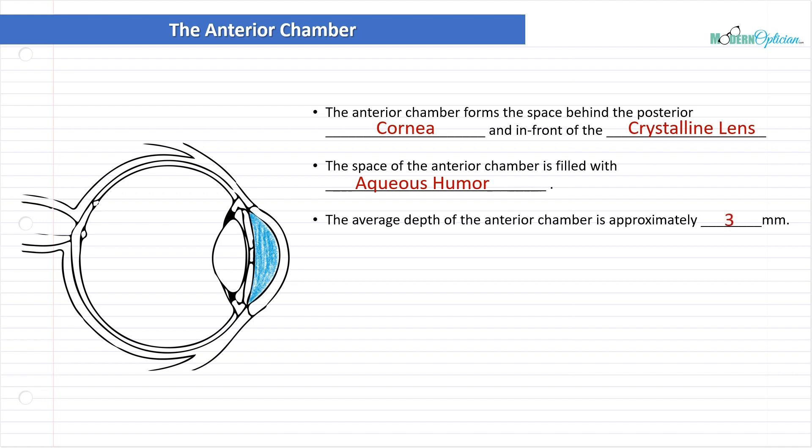The average depth of the anterior chamber is approximately three millimeters. Is that important? Not really. But I like it when students understand that we're dealing with really small stuff. When it comes to the refractive power of the eye, these depths actually do play a factor. The depth of the anterior chamber can play into the eye's ability to drain aqueous humor.